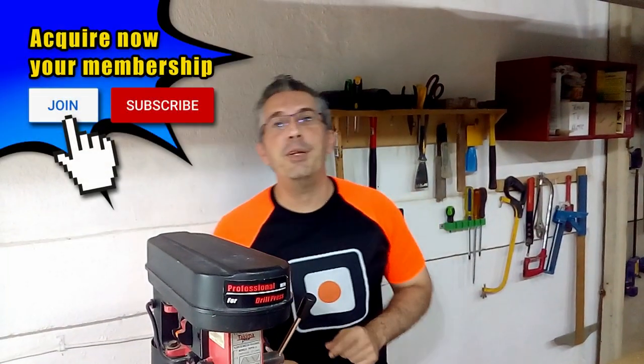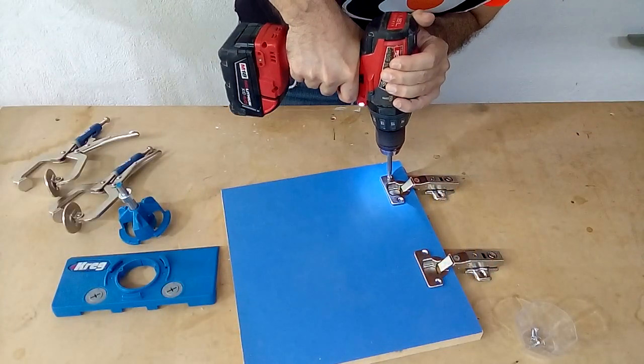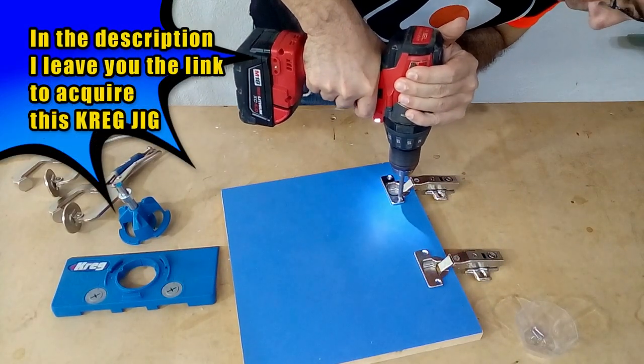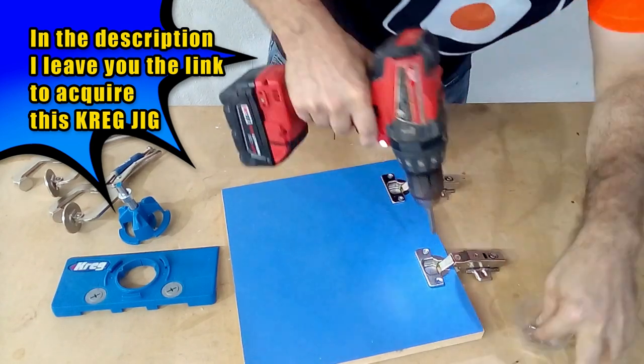Now you can be a real carpentry by clicking the join button of this video. We can see that the drilling is perfect and it was the same as the one we did with the bench drill, so we can now install our hinges.